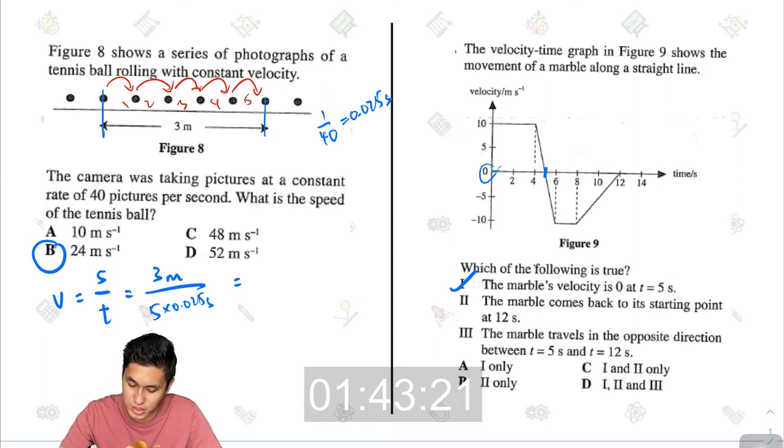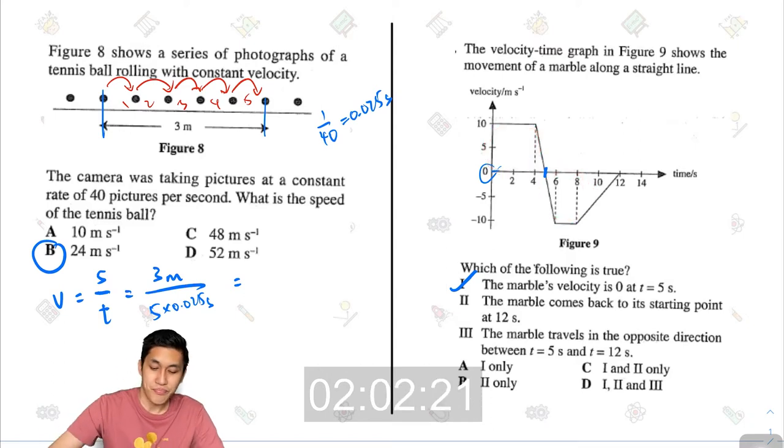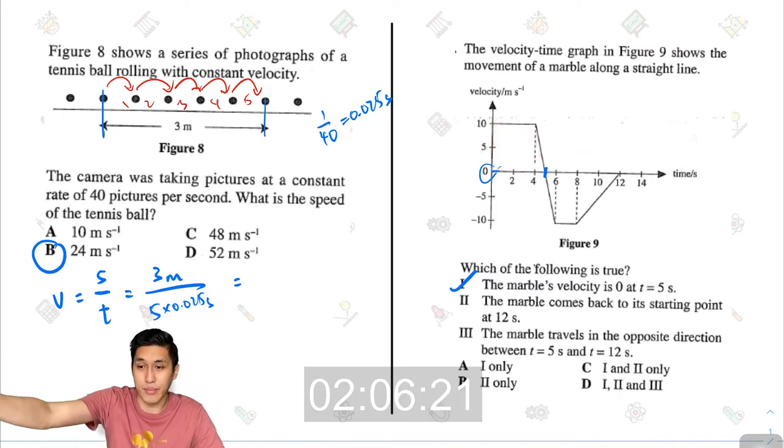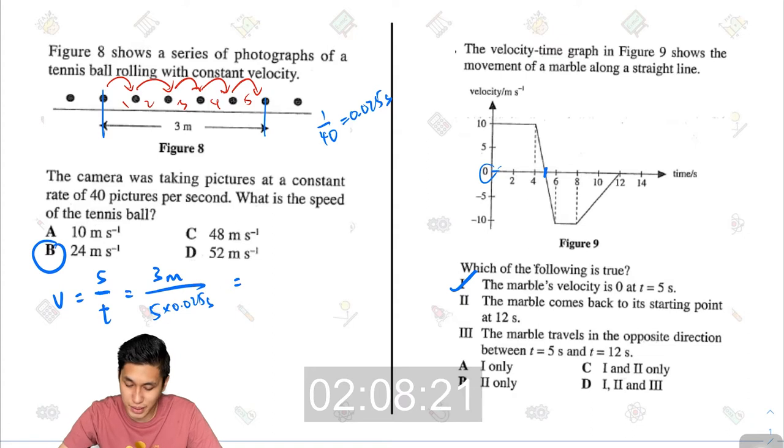The marble comes back to its starting point at 12 seconds. You need to figure out what is the total displacement. For a velocity time graph, the displacement equals the area underneath the graph. As you can see here, there's positive velocity on this side and negative velocity on this side.